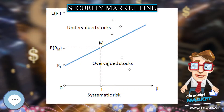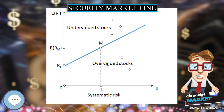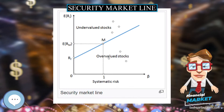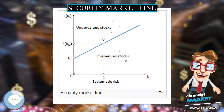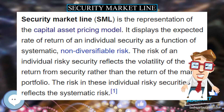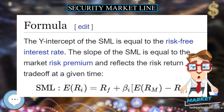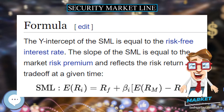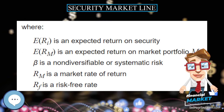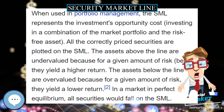The Security Market Line (SML) is the representation of the capital asset pricing model. It displays the expected rate of return of an individual security as a function of systematic, non-diversifiable risk. The risk of an individual risky security reflects the volatility of the return from that security rather than the return of the market portfolio — the risk in these individual risky securities reflects the systematic risk.